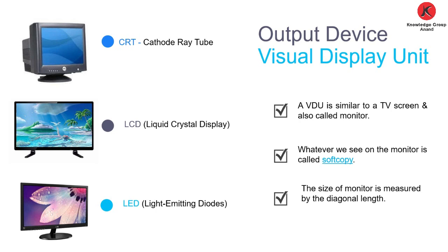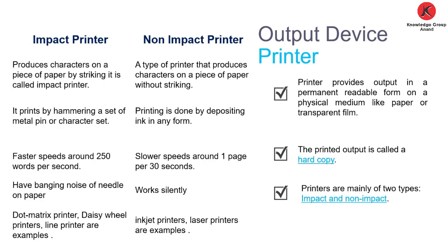The first output device is the Visual Display Unit, or VDU. It is similar to a TV screen and also known as a monitor. The information we see on the monitor is called a soft copy because we can see it but not touch it. The size of the monitor is measured by its diagonal length — from one corner to the opposite corner. There are three types of monitors: CRT (Cathode Ray Tube), LCD (Liquid Crystal Display), and LED (Light Emitting Diode).